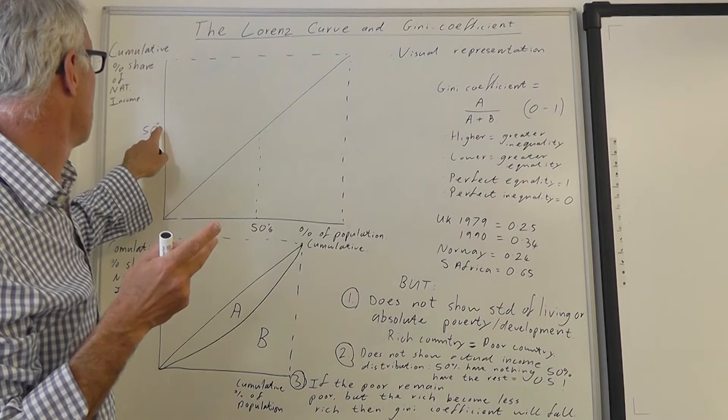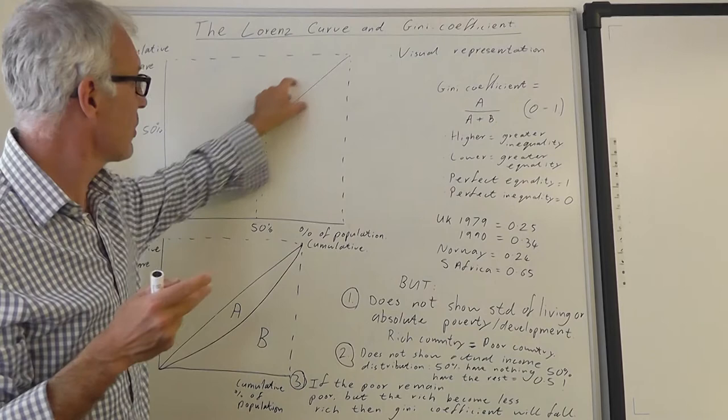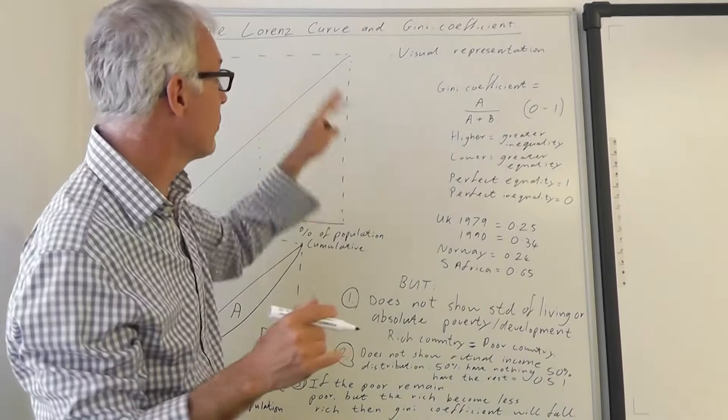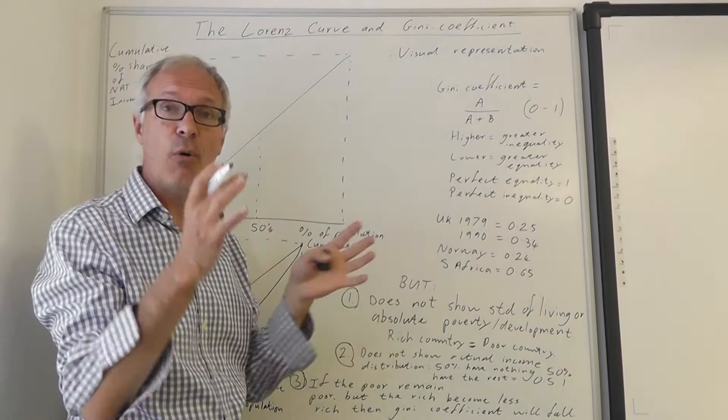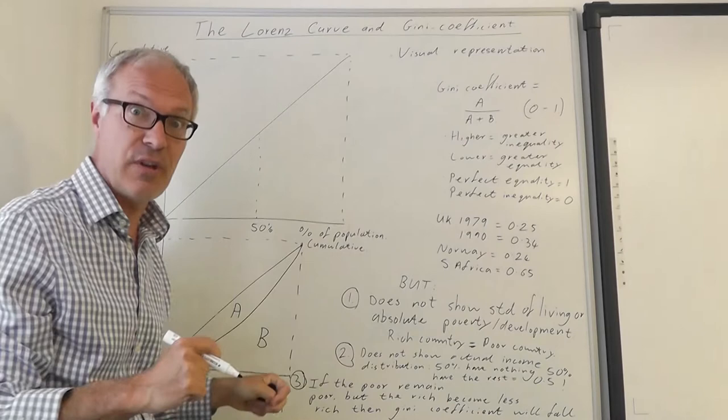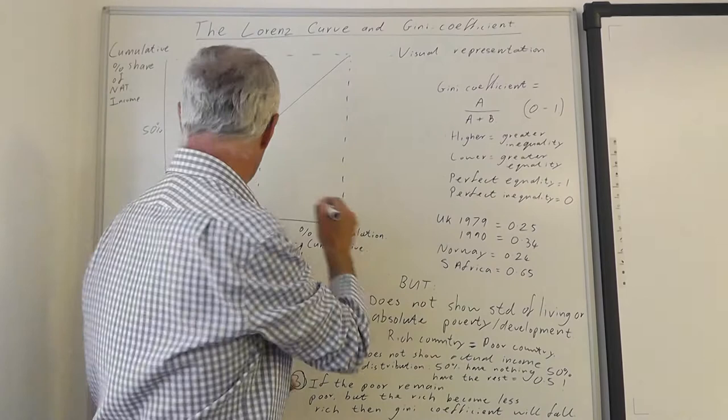We're going to be on this line at a cumulative percentage share of national income of 50%. So if you're on this line, everyone earns the same wages. You can use the Lorenz curve and the Gini coefficient to illustrate wealth and consumption inequalities, but we're going to focus on income inequality, which is how it's usually used.